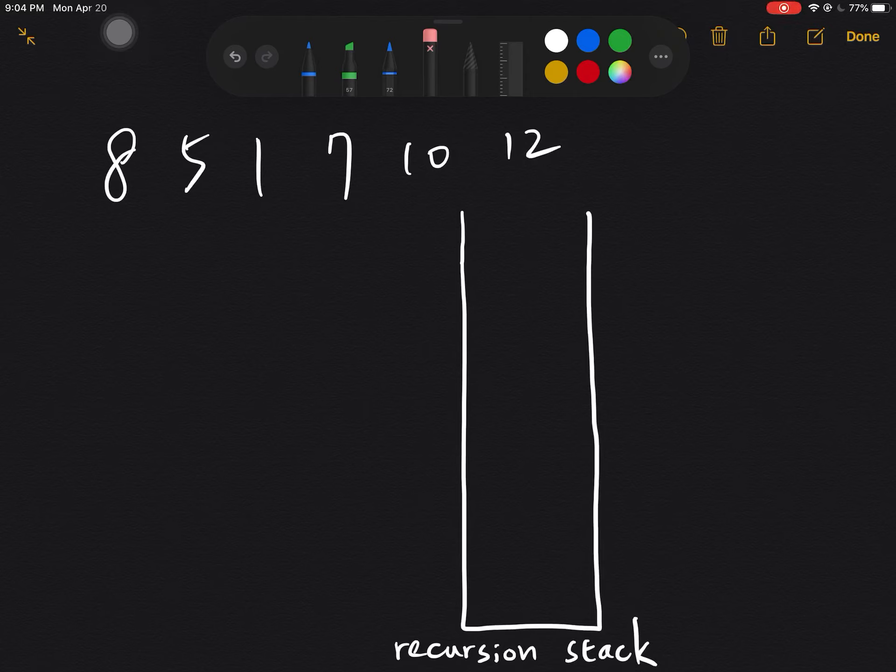So here I will rewrite the coding stack of the last video because I did not explain very clearly. First, A will call, and then A will call its left which will be 5, and 5 will call its left which will be 1.